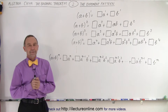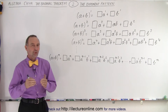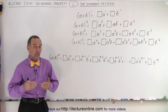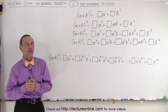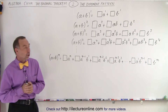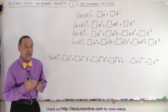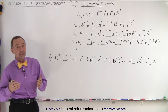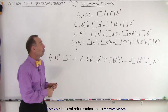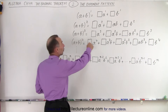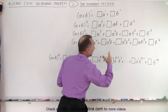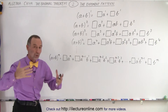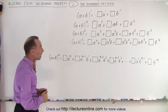Welcome to ElectronLine. There are two main patterns when we're dealing with binomial expansions. The one pattern is the exponents on the terms. The other pattern is the coefficients that go in front of each of the terms that we get when we do a binomial expansion.